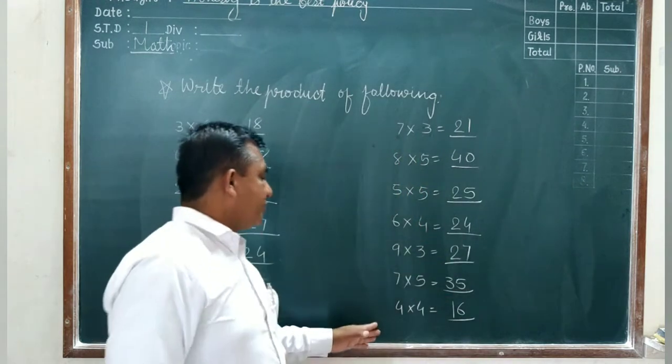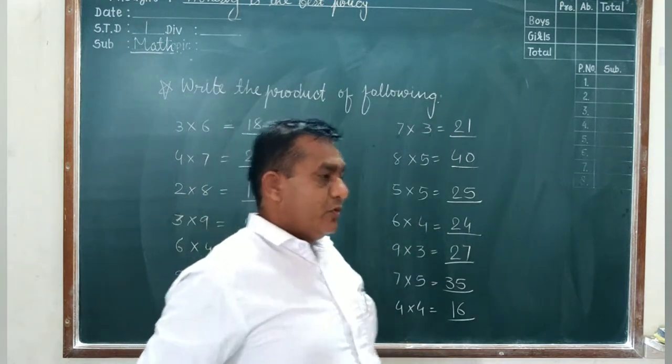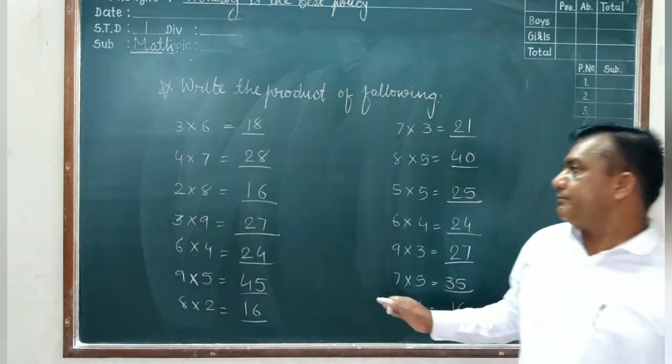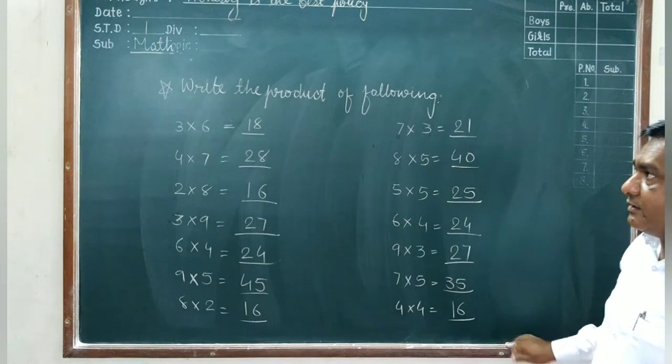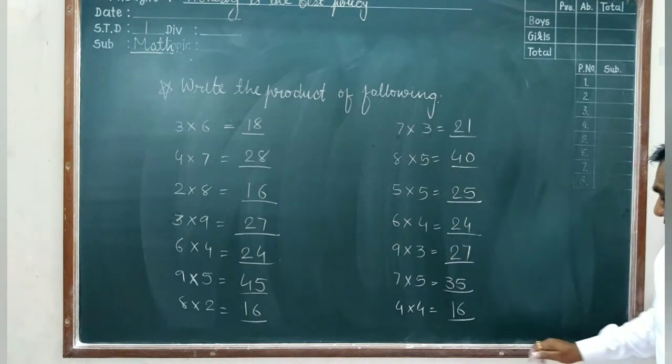Now friends, you learn the table number 1 to 5 in order. And also you take more sums for your practice. And you write these sums in your notebook. And overall this table will be higher. Thank you.